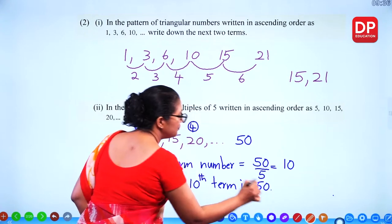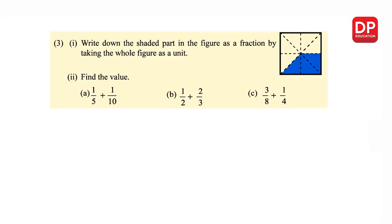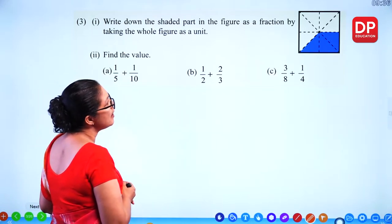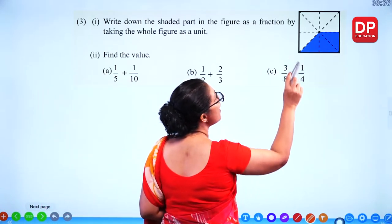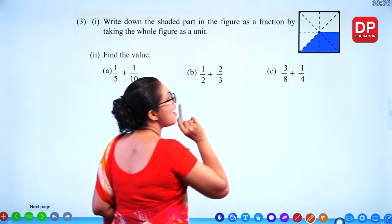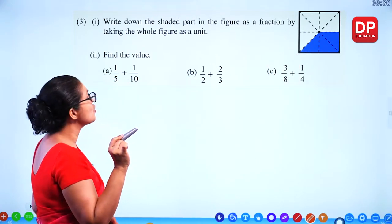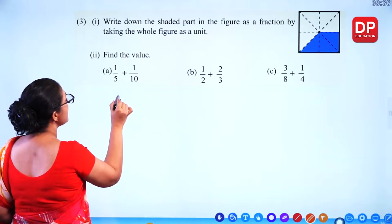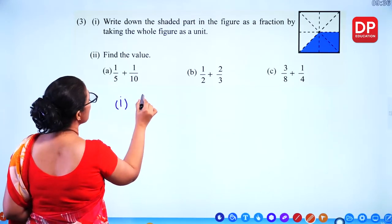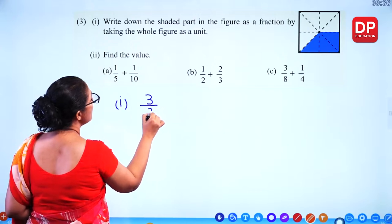Question number 3: write down the shaded part in the figure as a fraction by taking the whole figure as a unit. The whole figure is divided into 8 equal parts. Out of 8, 3 parts are shaded. So we can write the shaded part as three out of eight, that is 3/8.